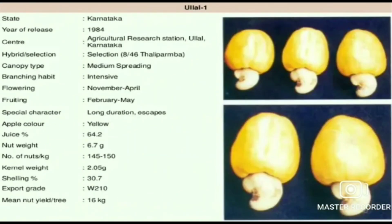Ulal 1 is introduced in the state of Karnataka. Year of release is 1984. The center is Agriculture Research Station, Ulal, Karnataka. Branching habit is intensive. Flowering is November to April. Fruiting is February to May. Nut weight is 6.7 grams. Kernel weight is 2.05 grams. Shelling percentage is 30.7%. Mean nut yield per tree is 16 kg.